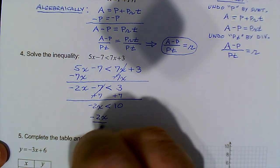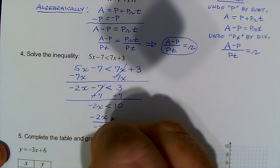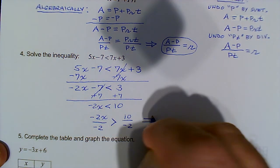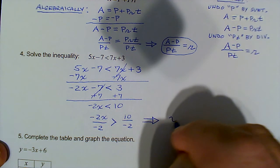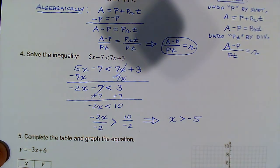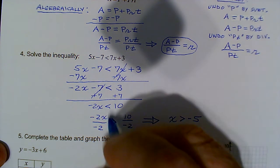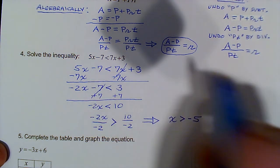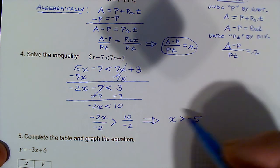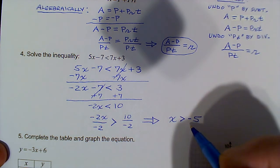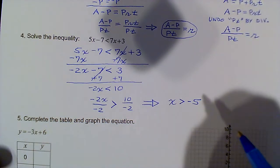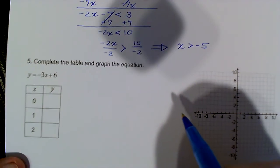The one special rule for inequalities is: if you multiply or divide both sides by a negative number, the sense of the inequality is reversed. Since I'm dividing by negative 2, this less-than becomes greater-than. Dividing 10 by negative 2 gives negative 5, so x is greater than negative 5. If you had brought the variable to the right instead, you wouldn't need to switch the inequality — you'd get negative 5 is less than x, which means the same thing.